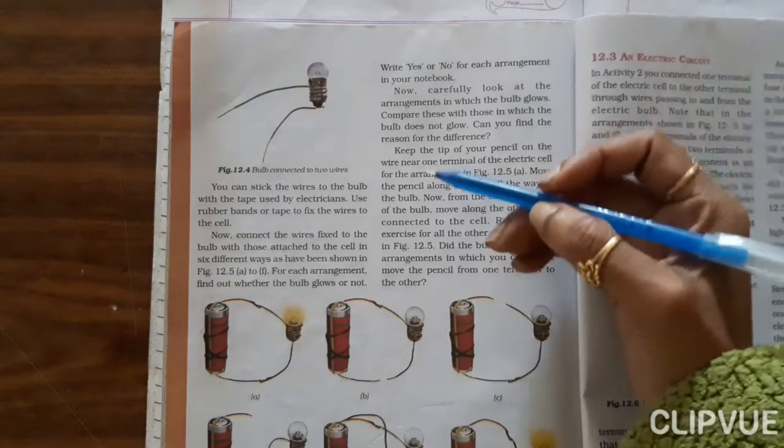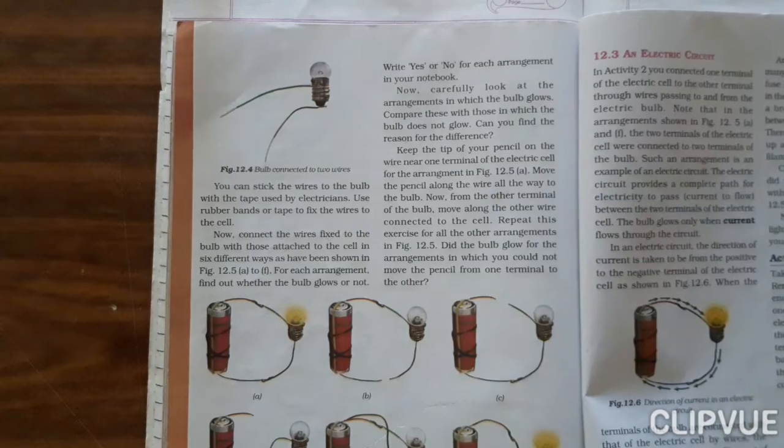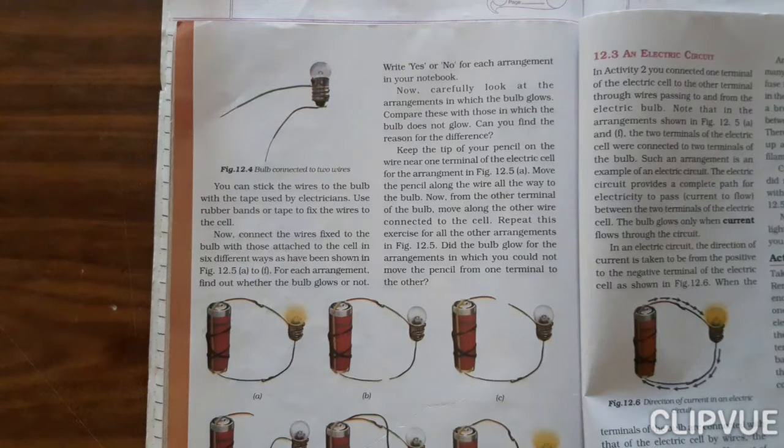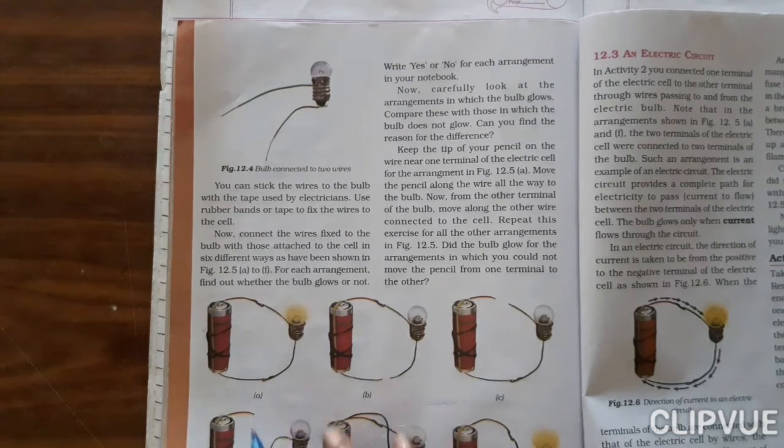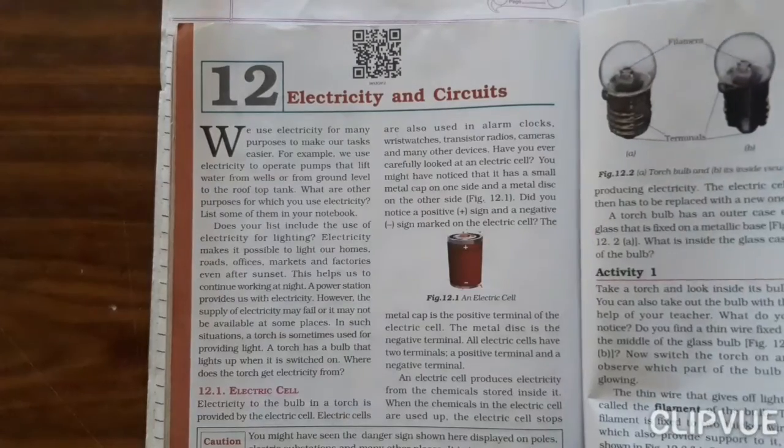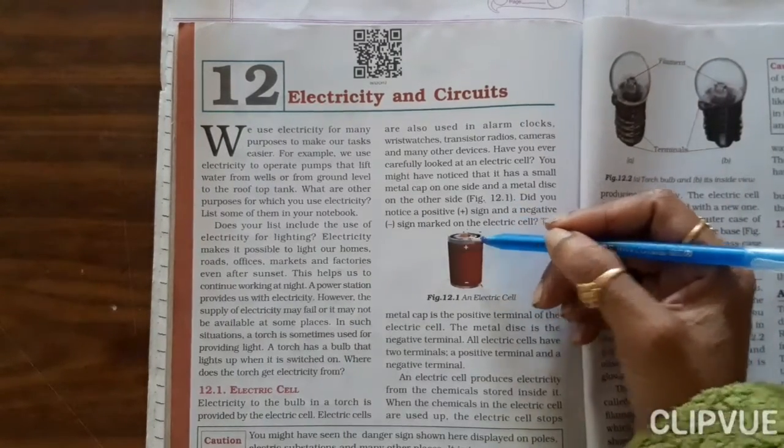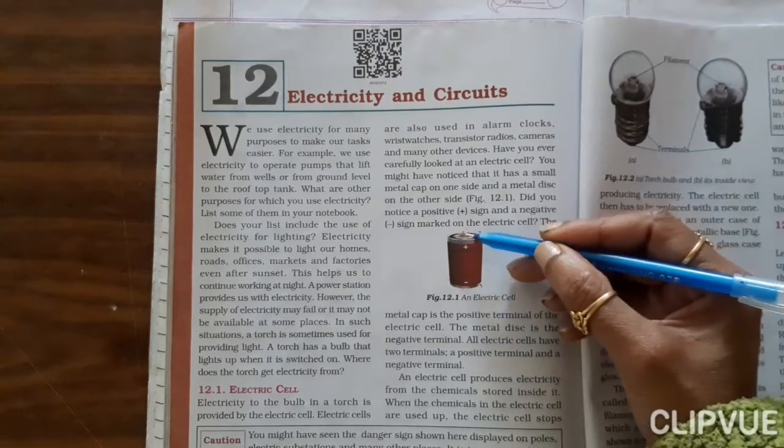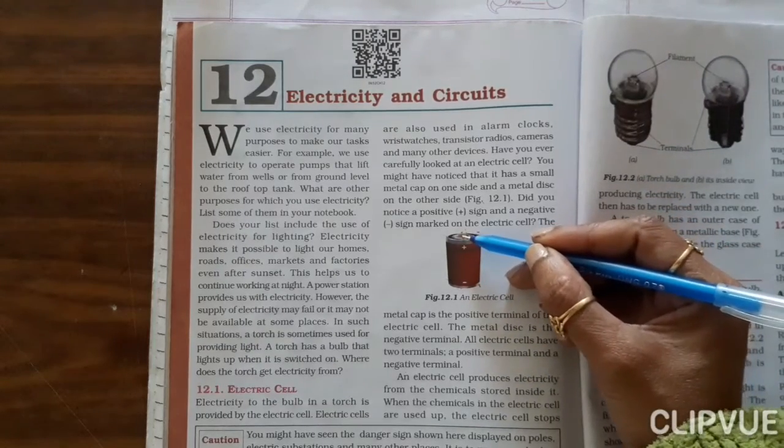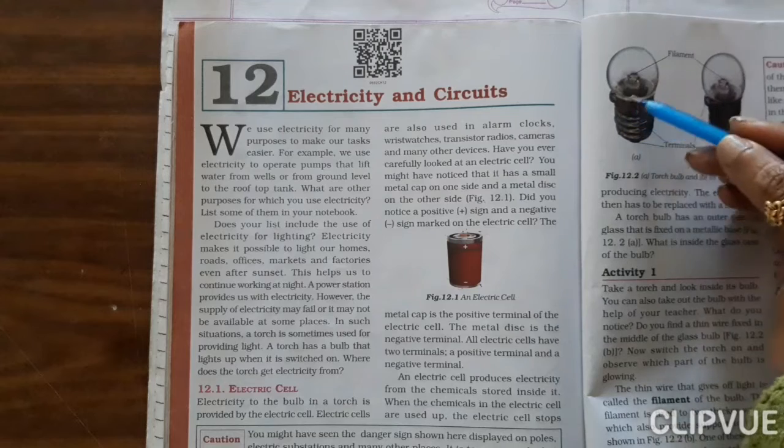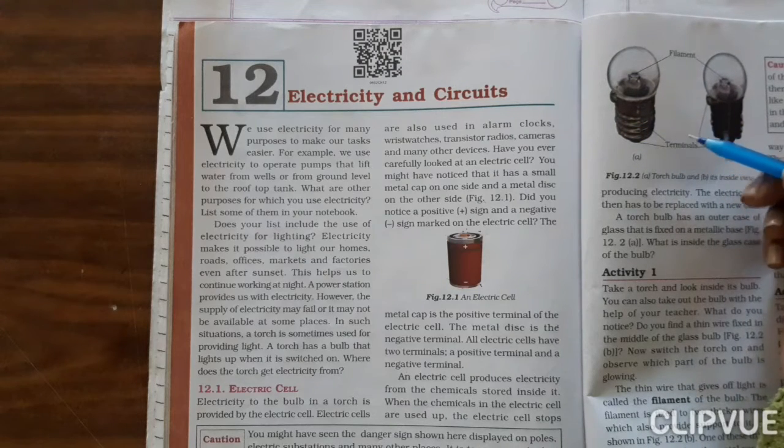Hello dear students, this is our science class of grade 6 and today we will continue with our chapter electricity and circuits. As we studied in our last class, a cell has positive and negative terminals, and the positive terminal is the one which is a bit embossed.